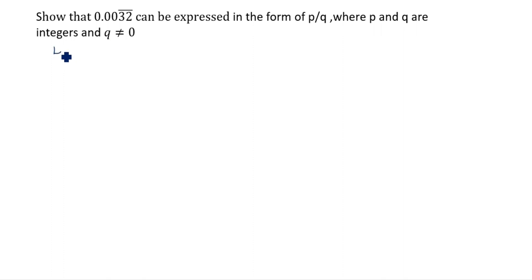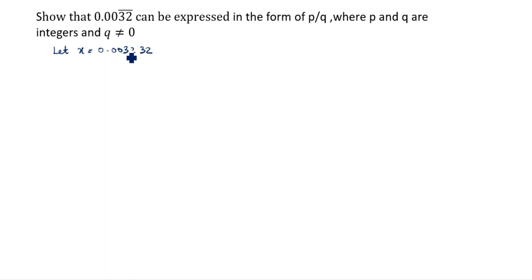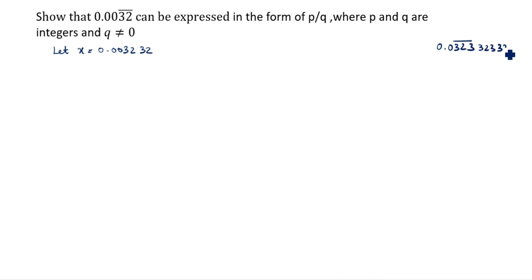Let x be equal to 0.003232... We write 3232 because only two digits have the bar. If three digits had the bar, for example 0.0323 bar, we would write 323323 instead.